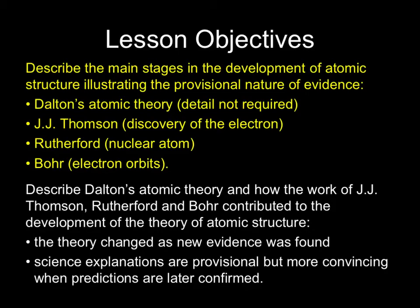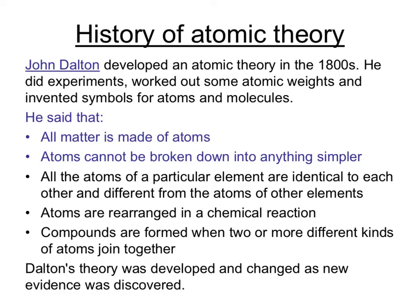Now we're going to look at the main stages in the development of atomic structure and how this was understood over a period of time in history. Looking at four main theories: Dalton, J.J. Thompson, Rutherford, and Bohr. And also look at why the theory changed as new evidence was found. Although atoms were first proposed by the ancient Greeks, the first chemist who really developed a proper atomic theory was John Dalton in the 1800s. He did various experiments looking at atomic weights. He worked out that different atoms had different masses. And he said that all matter is made out of atoms and that atoms couldn't be broken down into anything simpler. Essentially, Dalton just understood that everything was made out of tiny particles which were indivisible, called atoms, and that atoms of different elements were different in some way.